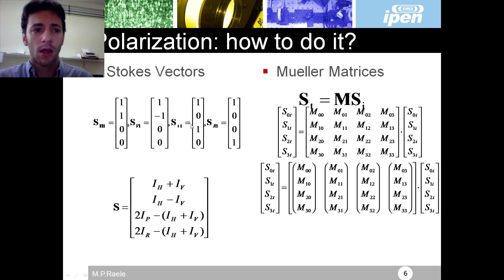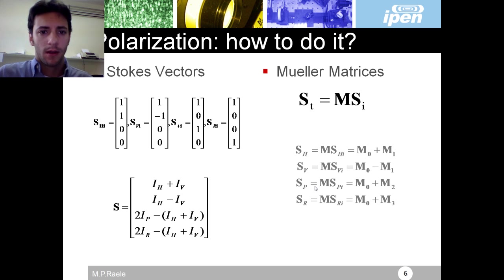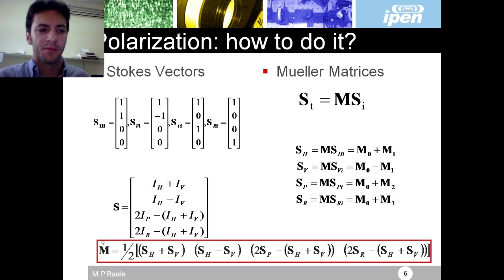And then if I substitute this over here and I make these measurements using this kind of system, then I get my Mueller matrix. This is described very well in the literature, so I will pass this fast also.